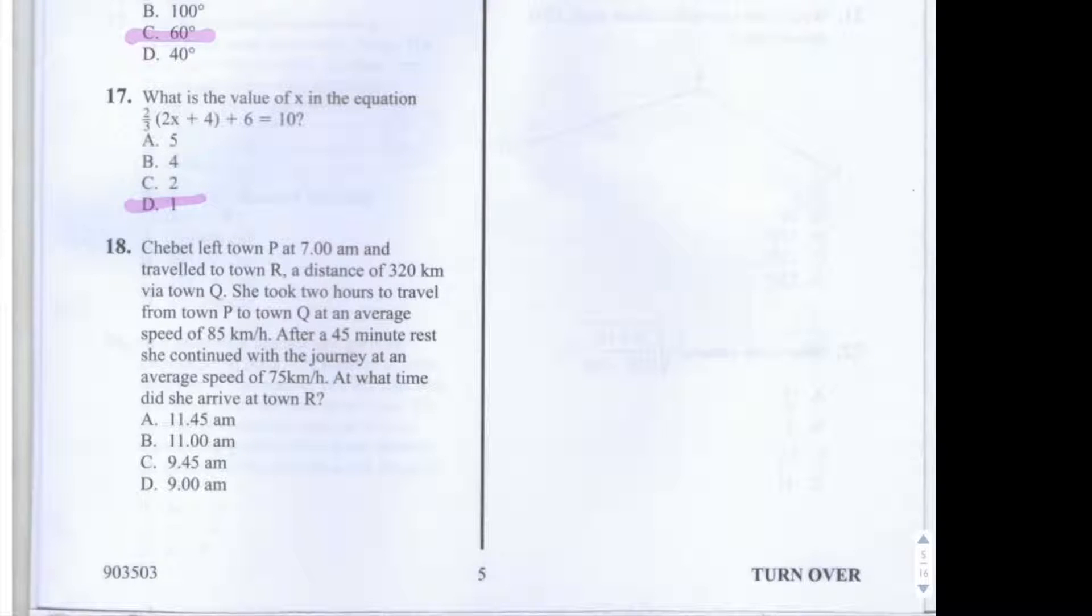This is question number 18 of the 2013 KCPE Maths exam and it says Chibet left town P at 7am and travelled to town R a distance of 320km via town Q. She took two hours of travel from town P to town Q at an average speed of 85km per hour.